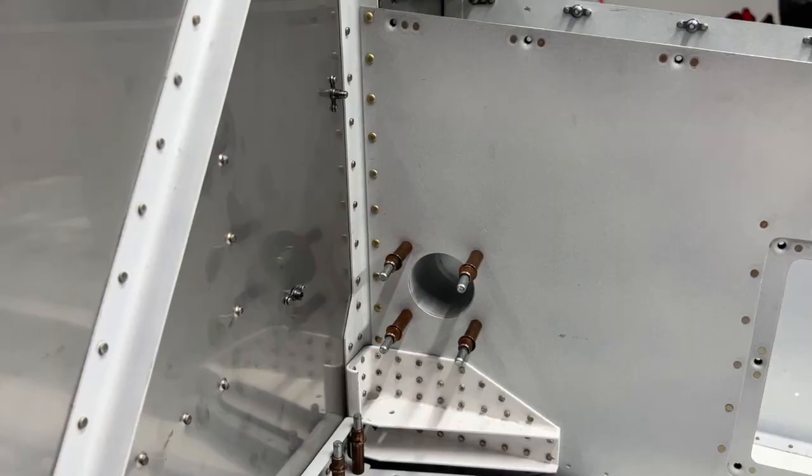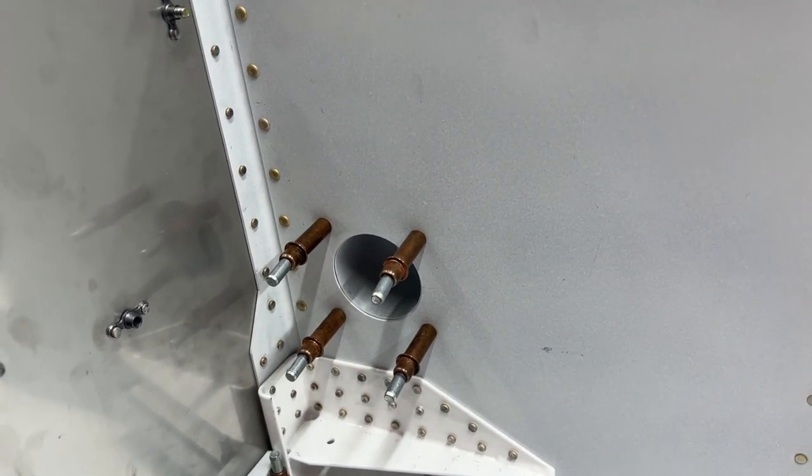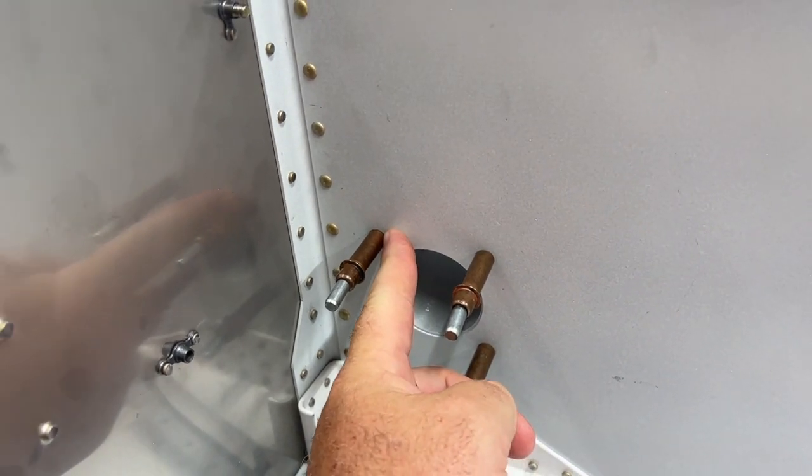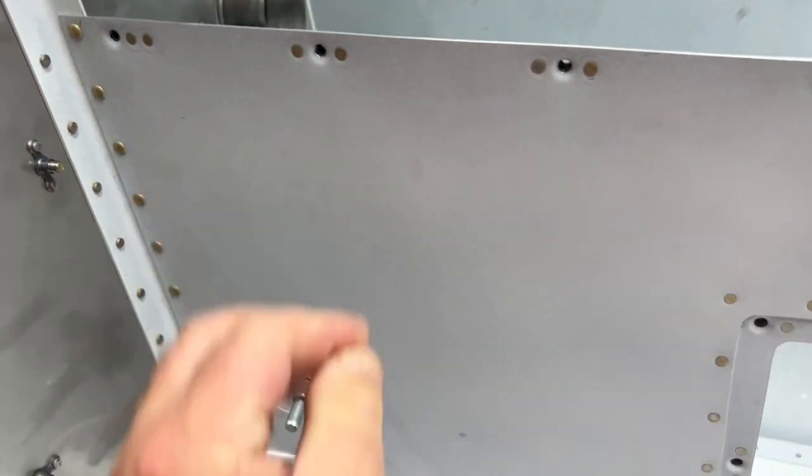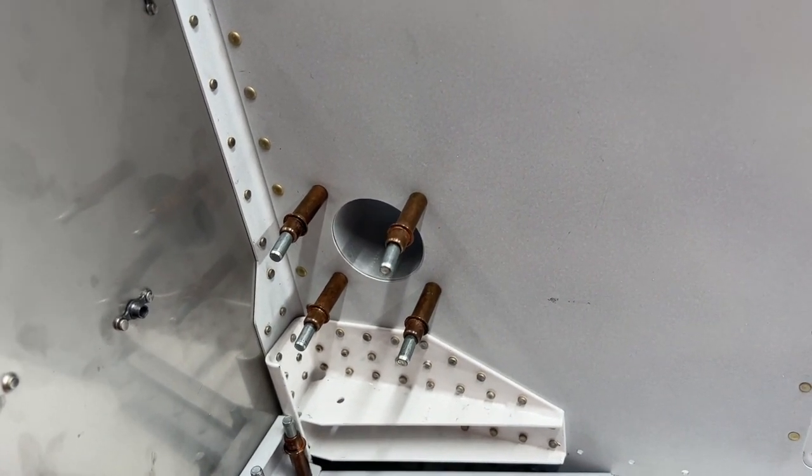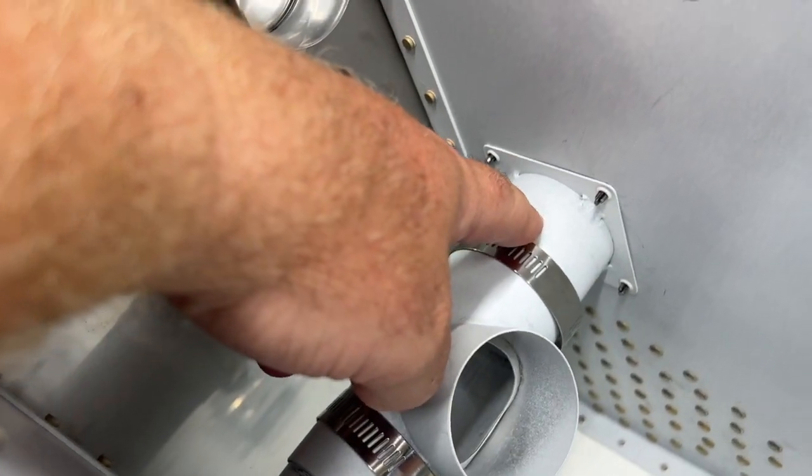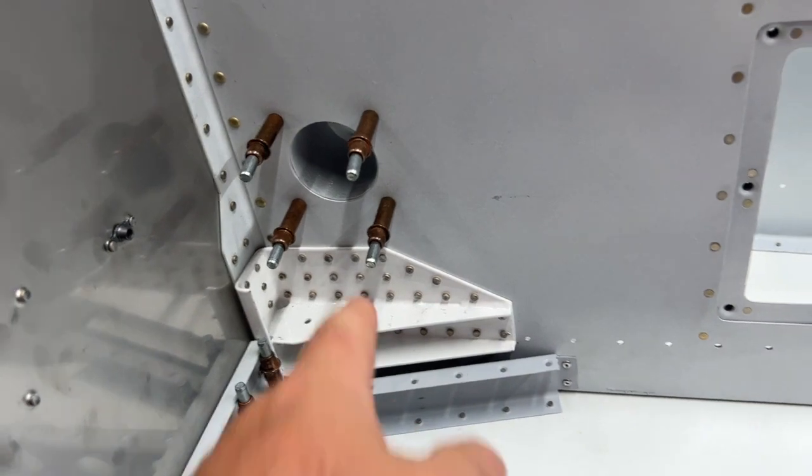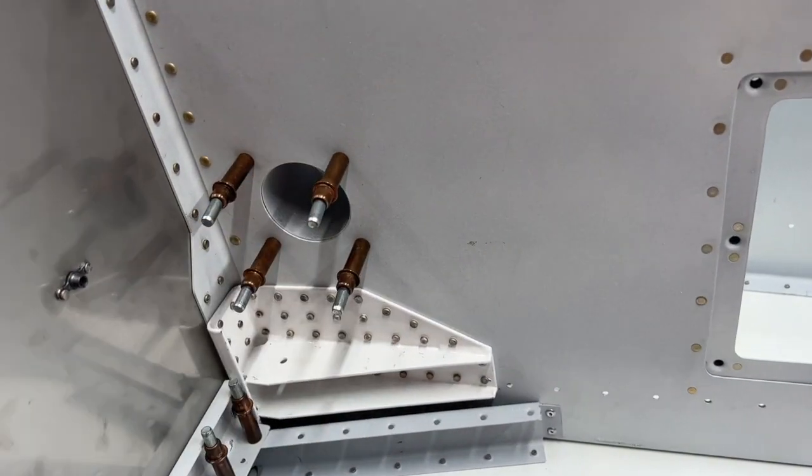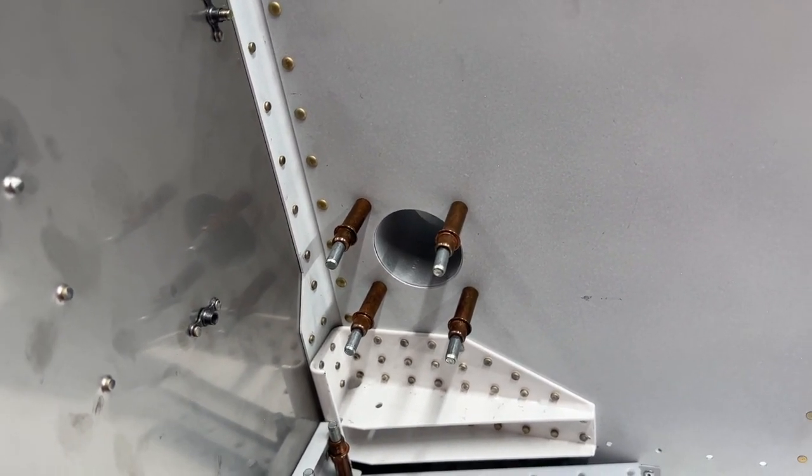Okay, so not sure why, but the instructions don't have you dimple these holes until after this is all installed. And even with my pool dimple set, this metal is so thick I had a really hard time dimpling them. So my suggestion is to dimple these holes and dimple the bracket before you install all of this so you can get to it. So I had a really hard time dimpling those. Those are going to be installed with pull rivets. But yeah, I was not able to get a good dimple using the close quarters dimpler.